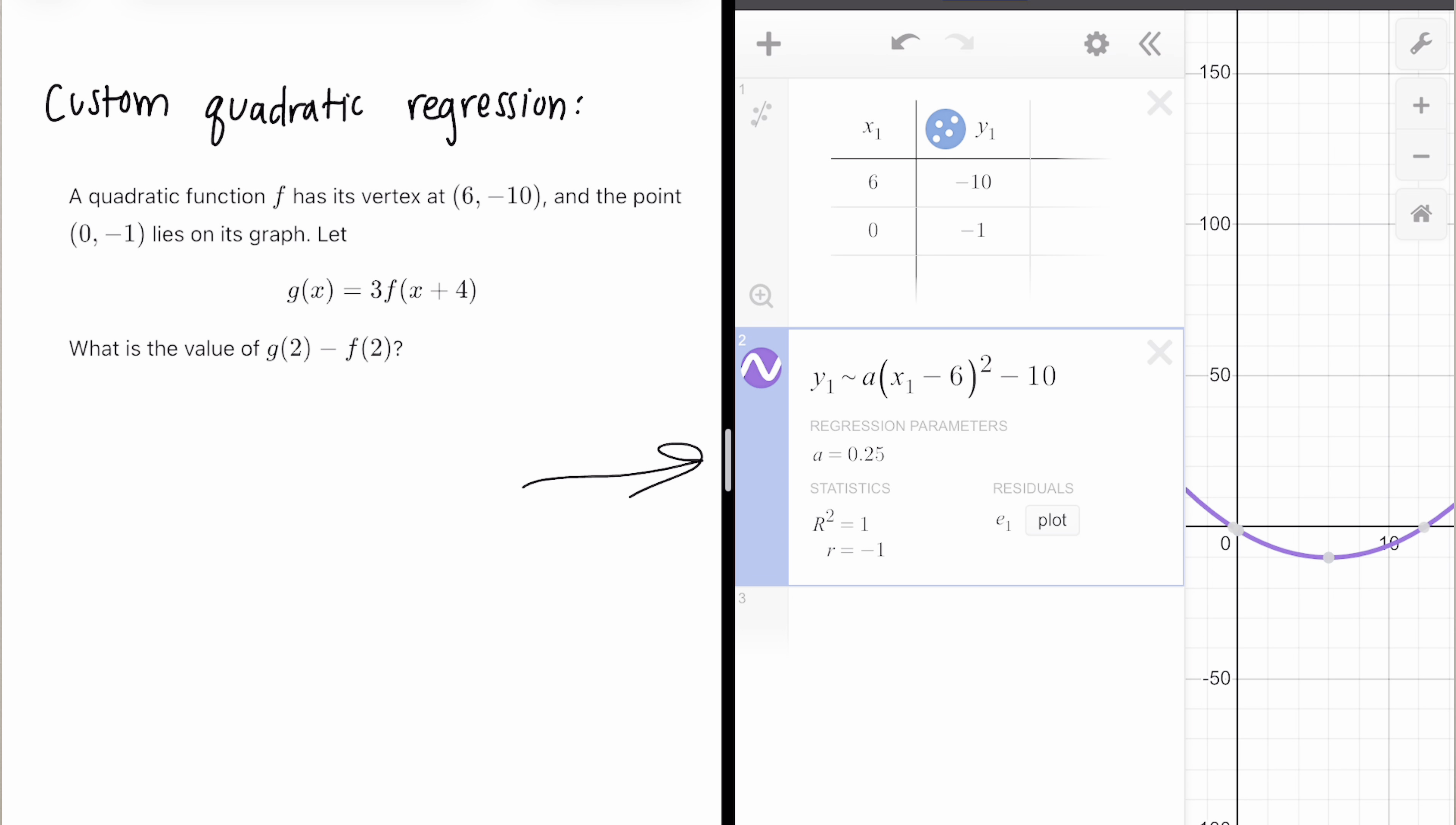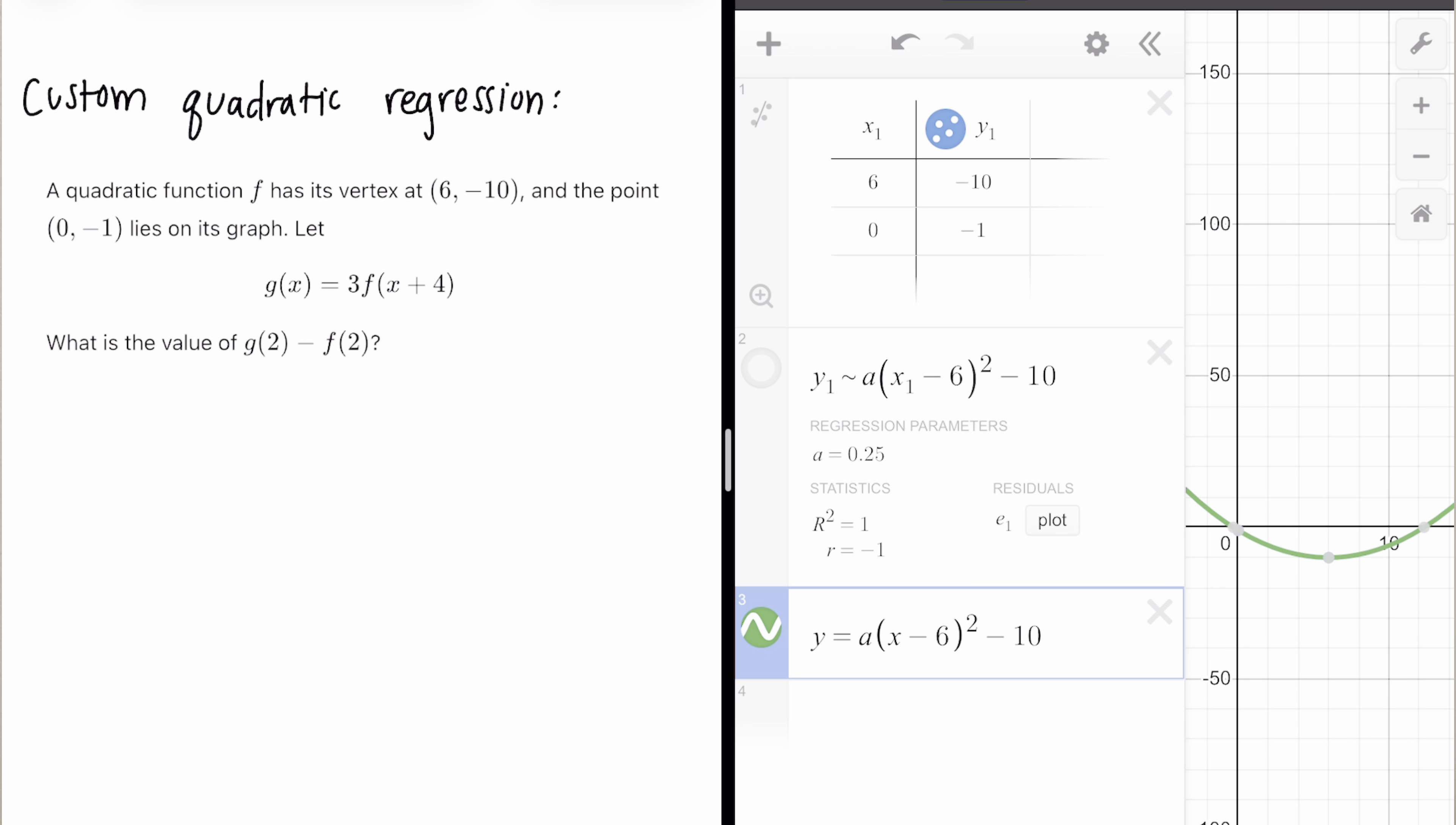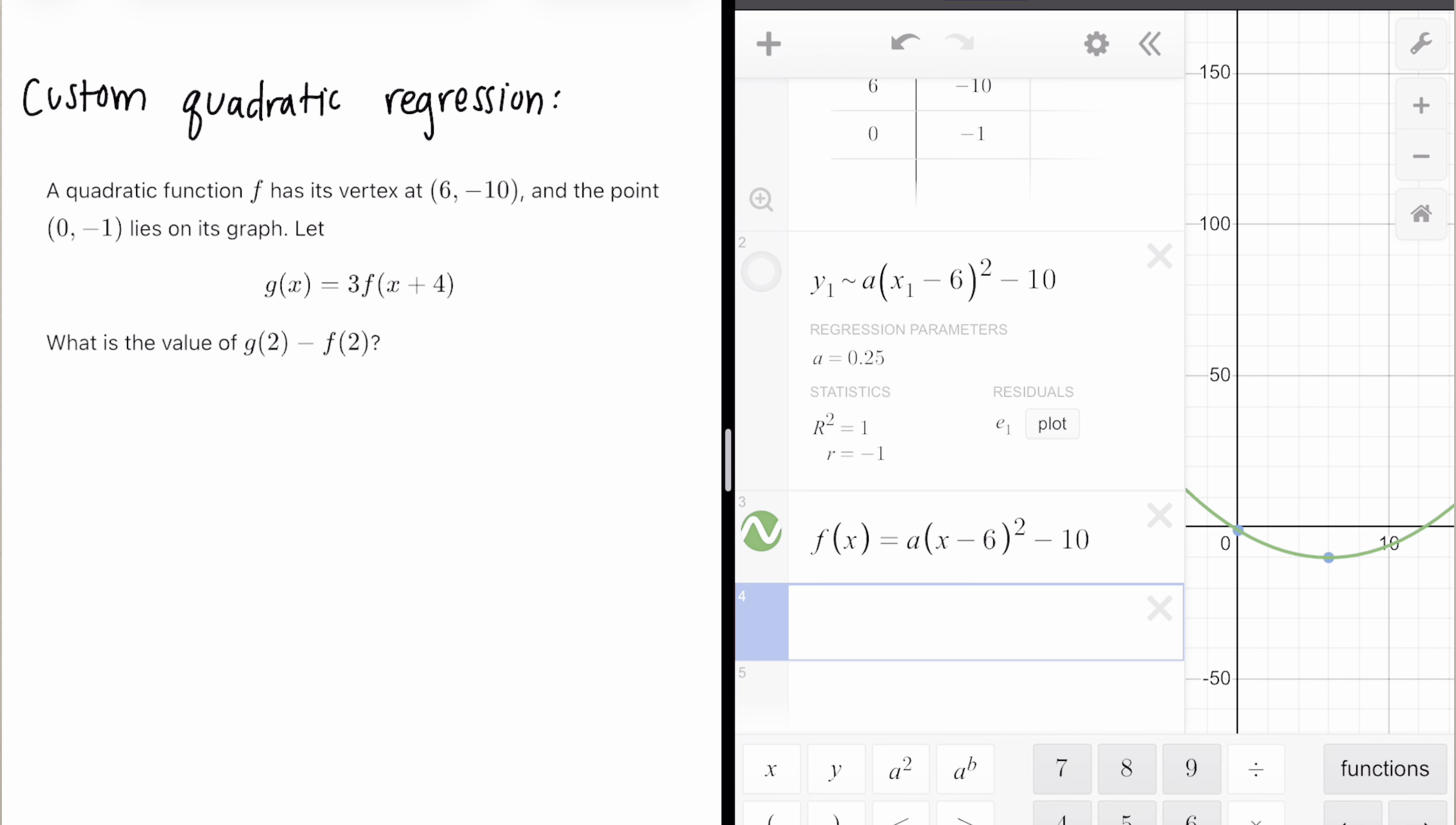From here, Desmos automatically solves for A for you. You don't have to do it by hand. So we can actually write out our equation with A. We don't need to put 0.25 and then (X minus 6) because this is our vertex form minus 10. This is our parabola if we turn this off because now we know that A is 0.25. The regression just solved that for us. We just solved for F(X) without having to do any math.